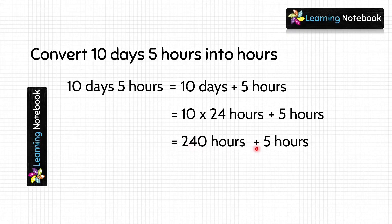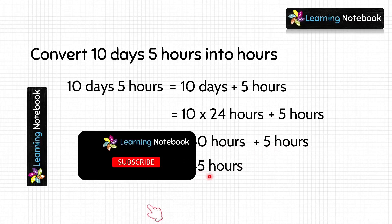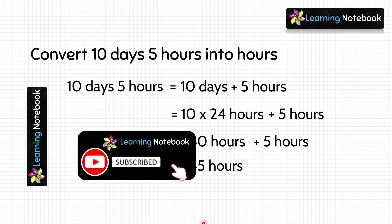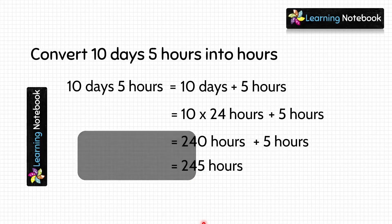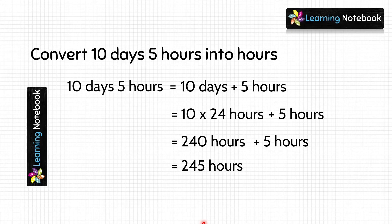10 into 24 equals 240, and we add 5 hours to it. 240 plus 5 equals 245, so 10 days 5 hours equals 245 hours. Now students, I am sure you have understood how to convert days into hours.